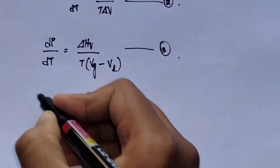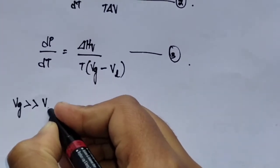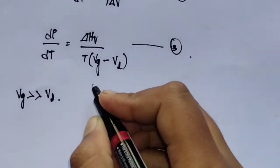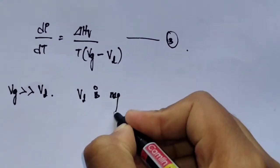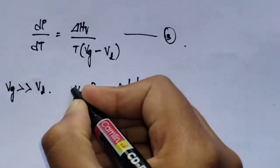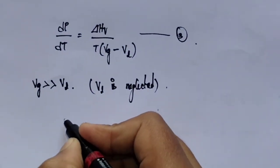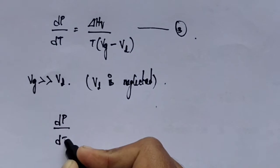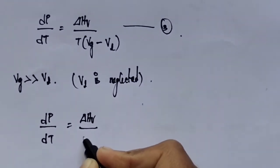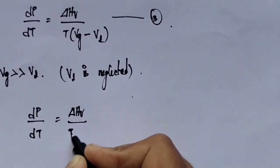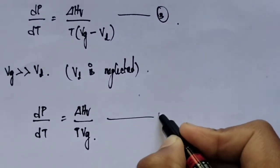Here, the volume of the liquid phase is very much less than the volume of the gas phase, so we can neglect it. When the volume of the liquid phase is neglected, the equation becomes dP/dT is equal to ΔHv upon T·Vg. Take this as equation number 4.